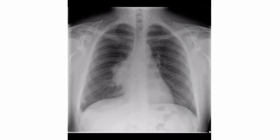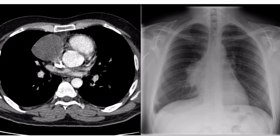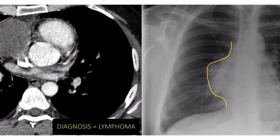On this chest X-ray we can see the silhouette of the hilar vessels, but the right heart border is obscured, so the mass is in the anterior mediastinum. This was confirmed on the CT, and the diagnosis is lymphoma.